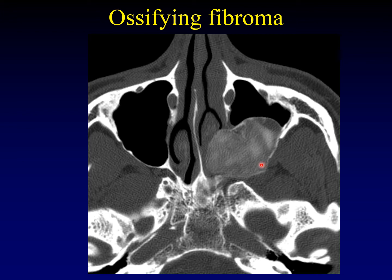Ossifying fibromas may sometimes have a characteristic stellate pattern of calcification, so you can really clinch the diagnosis, but they don't have to. The configuration is the key.